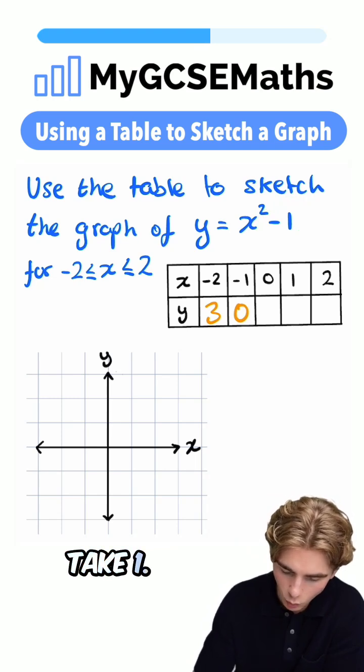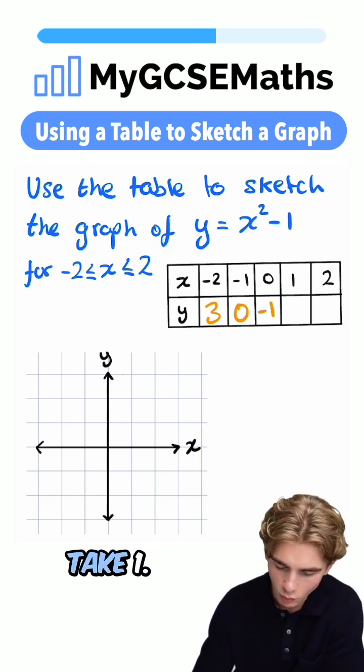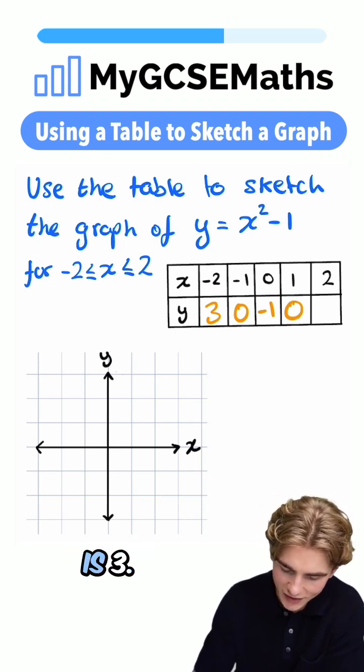Next up, zero squared is zero. Take one is minus one. One squared is one. Take one is zero. Two squared is four. Take one is three.